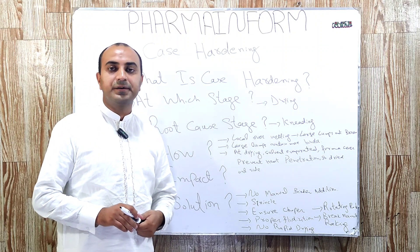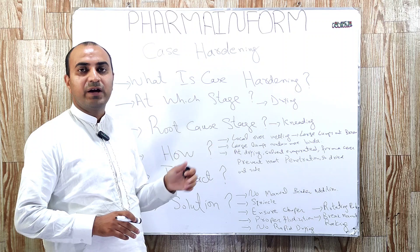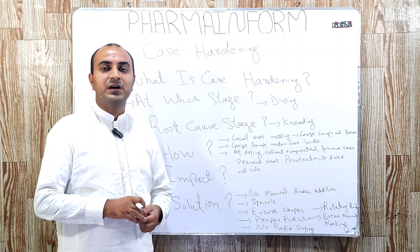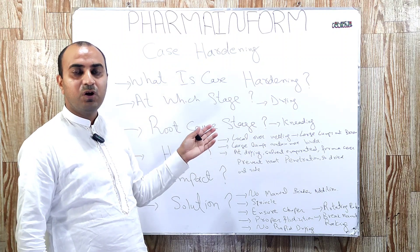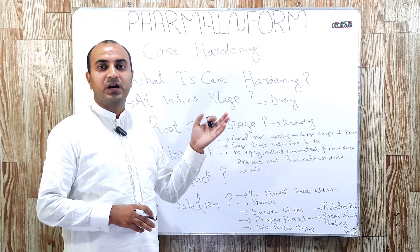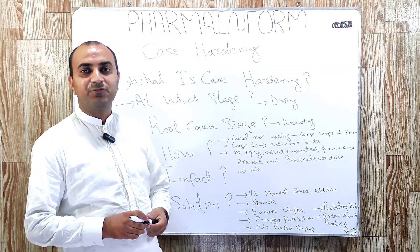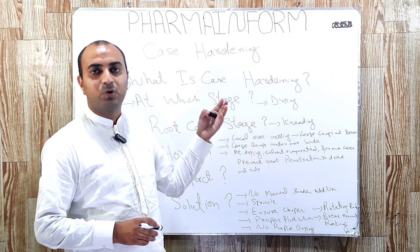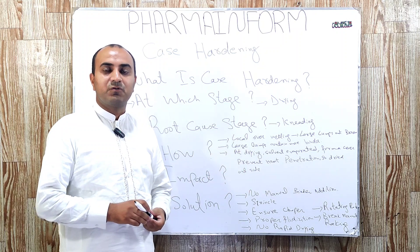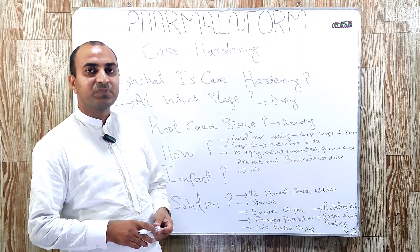How does case hardening occur? As we know, the binder is added to the powders to form the wet mass or granules in the wet granulation process. During the process of adding binders to the powders, sometimes there is localized over-wetting, which may result in the production of large lumps. If these large lumps are not properly broken down using the wet mill, they may entrap an extra quantity of binder.